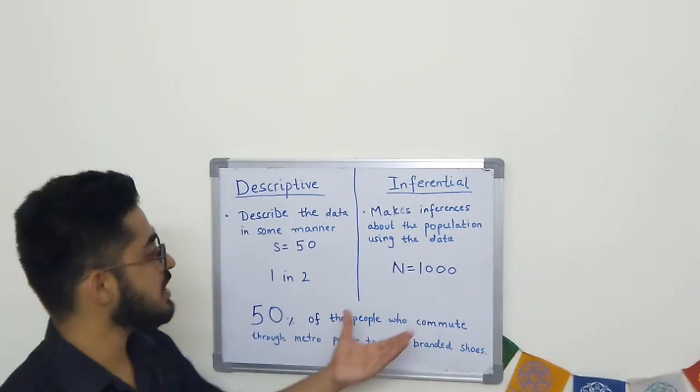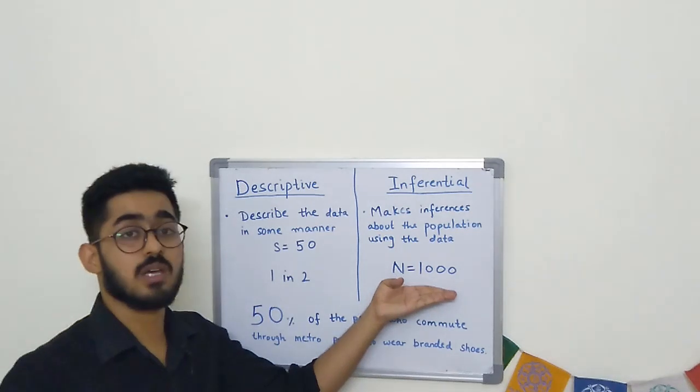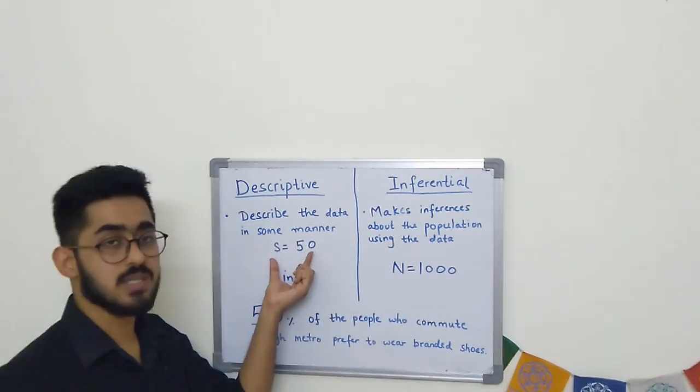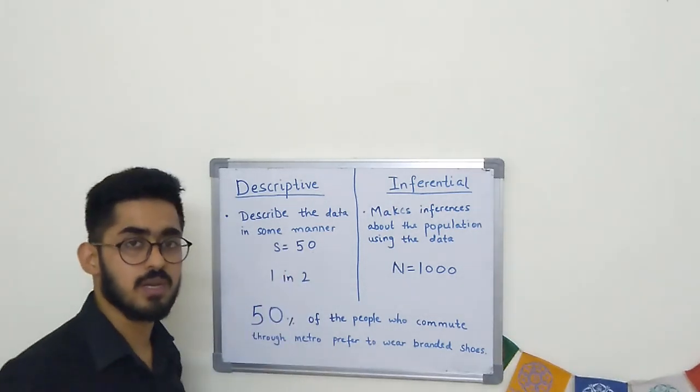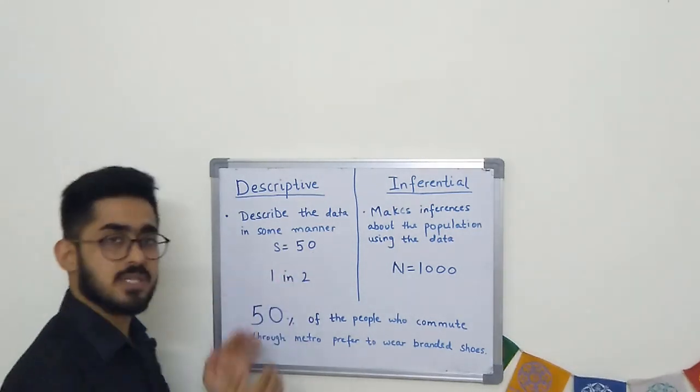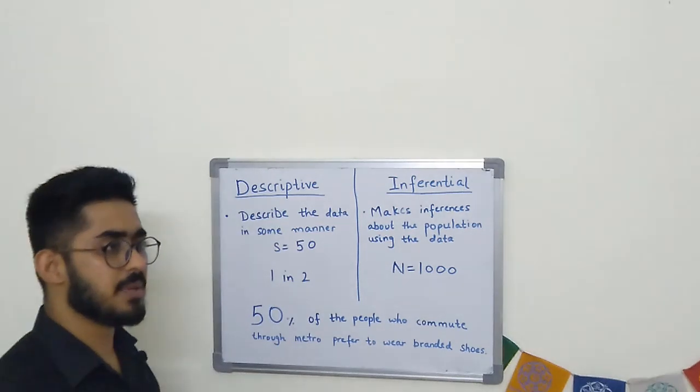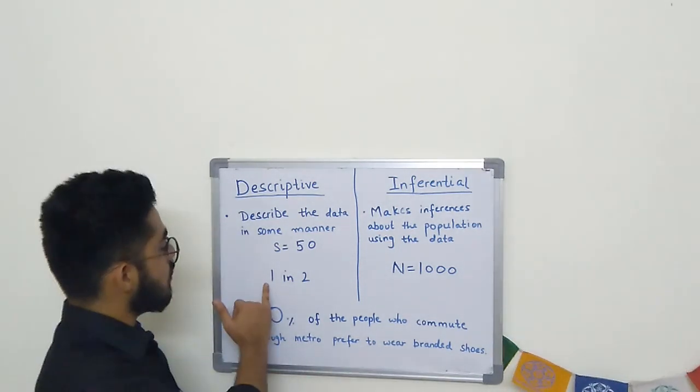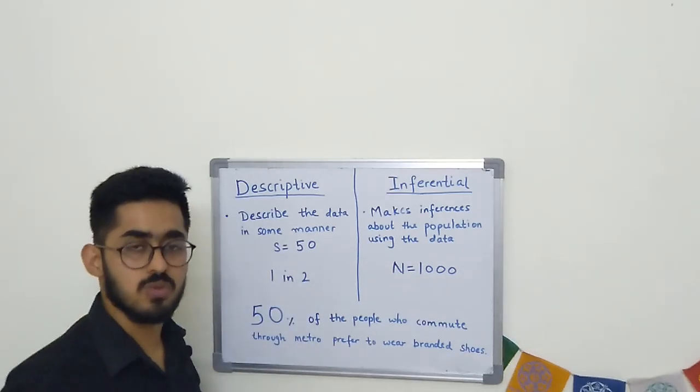If you have a population of 1,000 people in the metro, you take a small sample of 50 people. You study those 50 people. Let's say you observe that every second person, one in two, is wearing branded shoes.